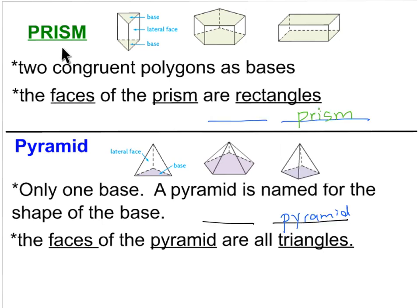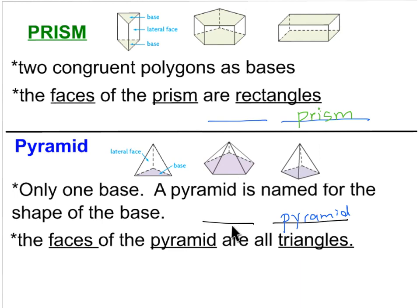Think of it like a family name, just like you have a last name. The family name is prism, so the last name is prism, and the first name is the shape of the base — which is why we have a triangular prism, pentagonal prism, and rectangular prism. It's the same concept for pyramids: pyramid is the family name, and the first name is the name of the base — triangular pyramid, pentagonal pyramid, square pyramid.